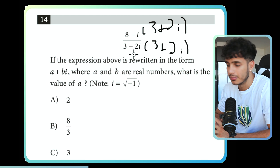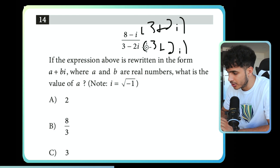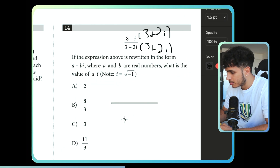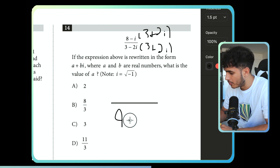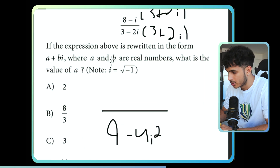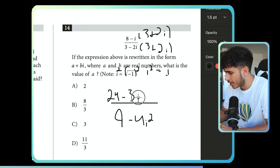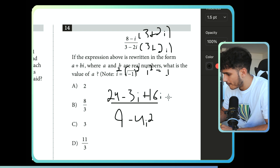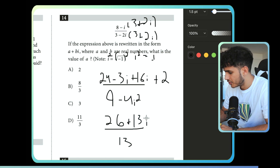Anytime you see this fraction for a conjugate problem — for an imaginary question — you know automatically this most likely is going to ask you to take the conjugate. So the first thing I do is just do this quick calculation. The bottom becomes 9, because the inner and the outer terms cancel since it's (a+b)(a−b). So you're left with minus 4i squared. i squared equals negative 1, so the denominator becomes 9 plus 4, which is 13. The numerator is 26 plus 13i. Splitting the fraction gives us 2 plus i.